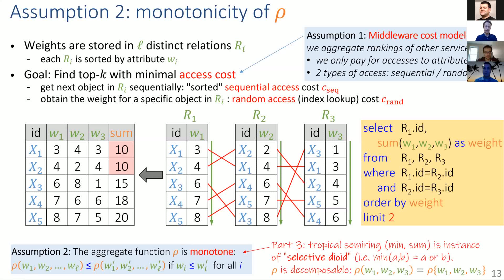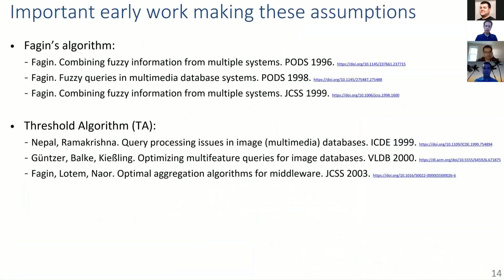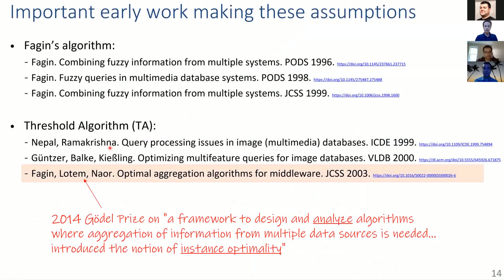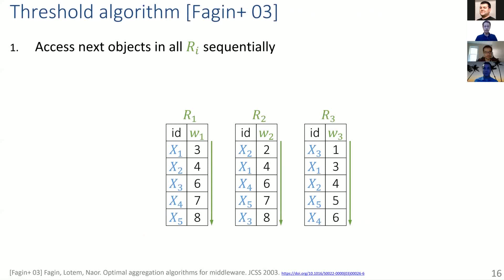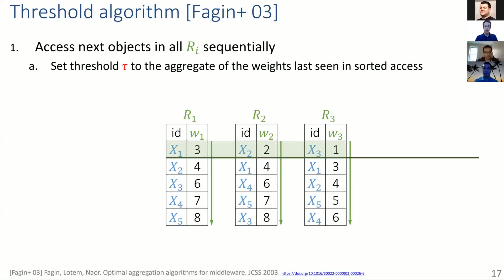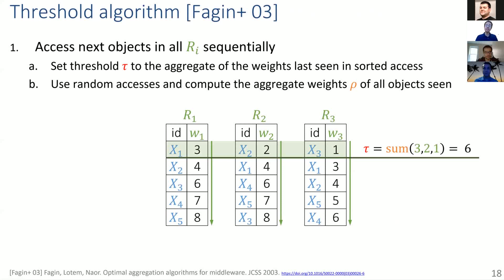Some important early work on this mathematical assumption produced three papers that proposed the Threshold Algorithm. The last one became famous — awarded the Gödel Prize — because they analyzed the algorithm and defined the very important concept of instance optimality. In this algorithm, we access objects sequentially across all tables and get the top results seen so far. We set the threshold to the aggregate over the last-seen values — here that is 6 — and then use random accesses to compute the aggregate weights of all objects seen so far.